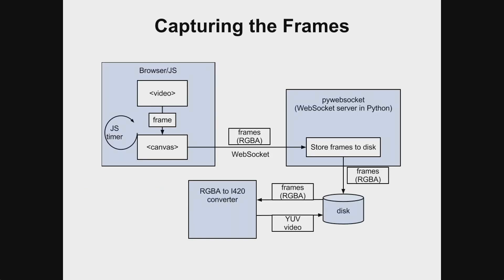The first problem to solve was how to record what's coming out in the video tag on the other side. We first considered screen scraping solutions where we scrape the pixels on the screen, but fortunately we were able to avoid that because you would need a platform-specific implementation. Instead, it turns out you can take a canvas tag and tell it to capture the pixels displaying in that video tag right now. We hook that up to a JavaScript timer that tries to capture at 30 FPS. We ran into a problem — we can't write frames to disk from the JavaScript environment. So our intern wrote a Python server that we talked to using WebSockets, and the Python server writes to disk. After running that step, you end up with a couple hundred image files on disk, and then we run a small tool to consolidate those into one YUV video — that is raw video.